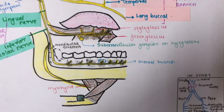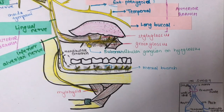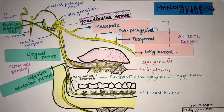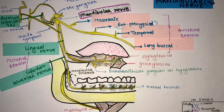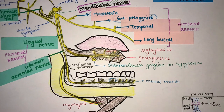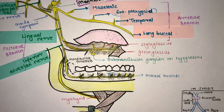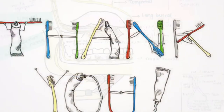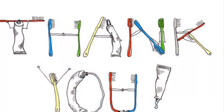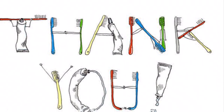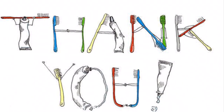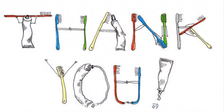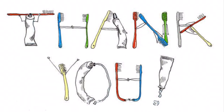In short, the mandibular nerve has sensory and motor roots that unite at the foramen ovale, then divide again into anterior and posterior branches. That was it for this video — I hope you found it helpful, thank you so much.